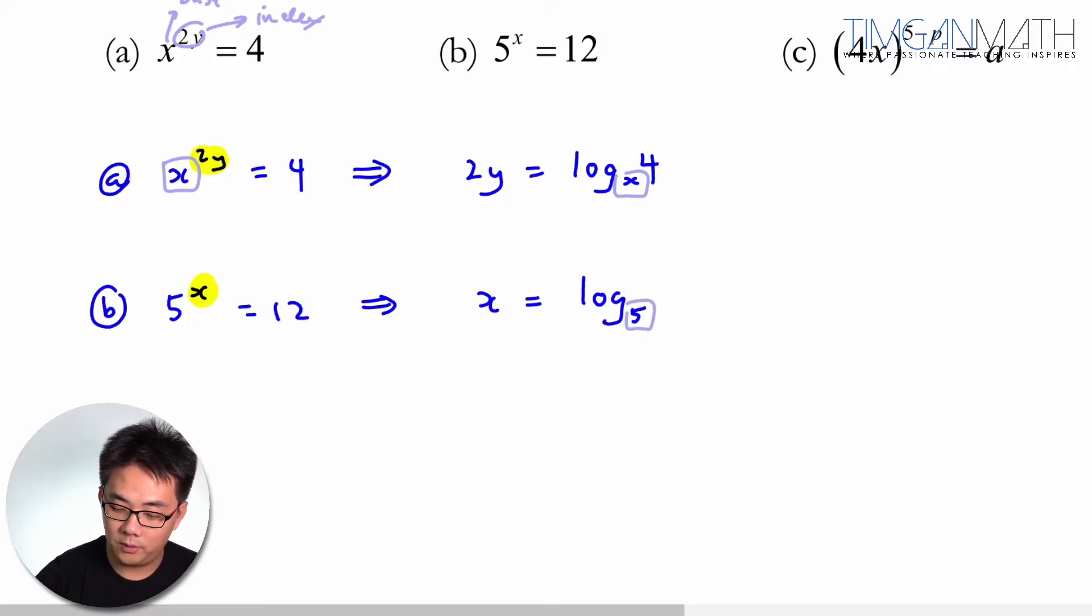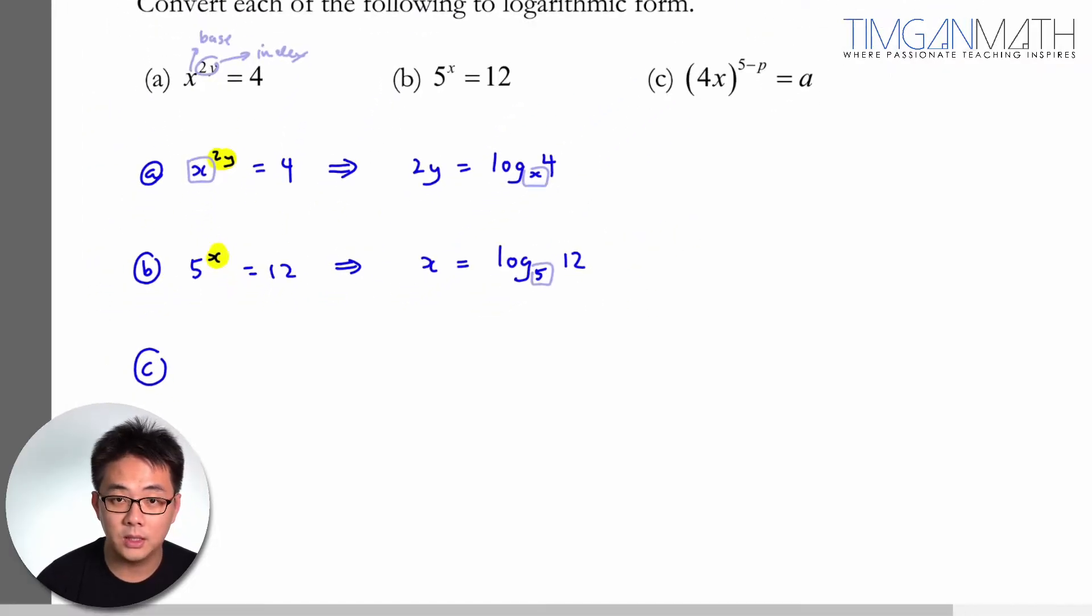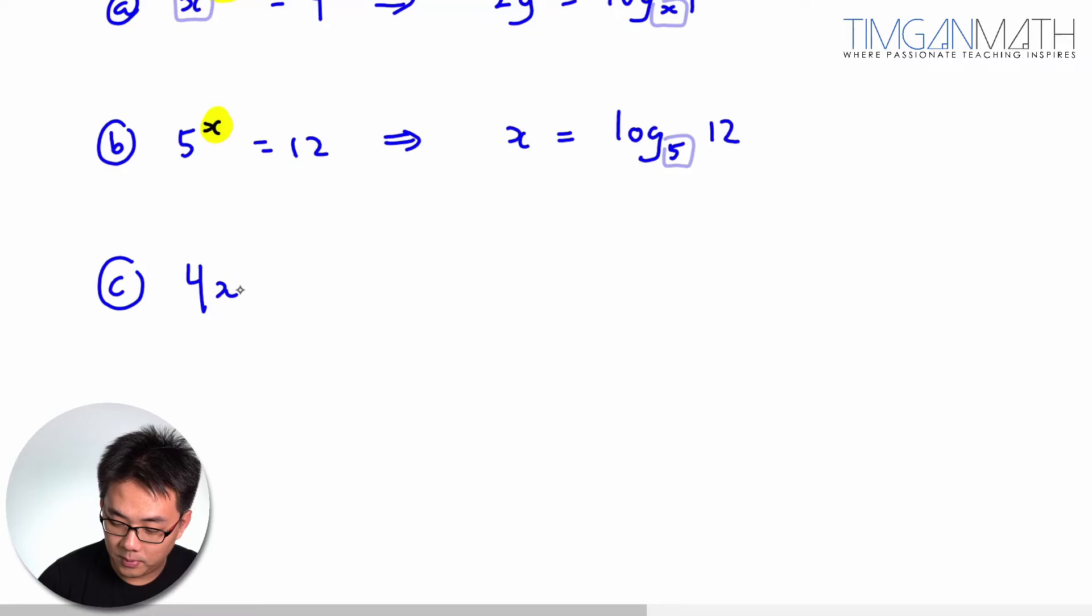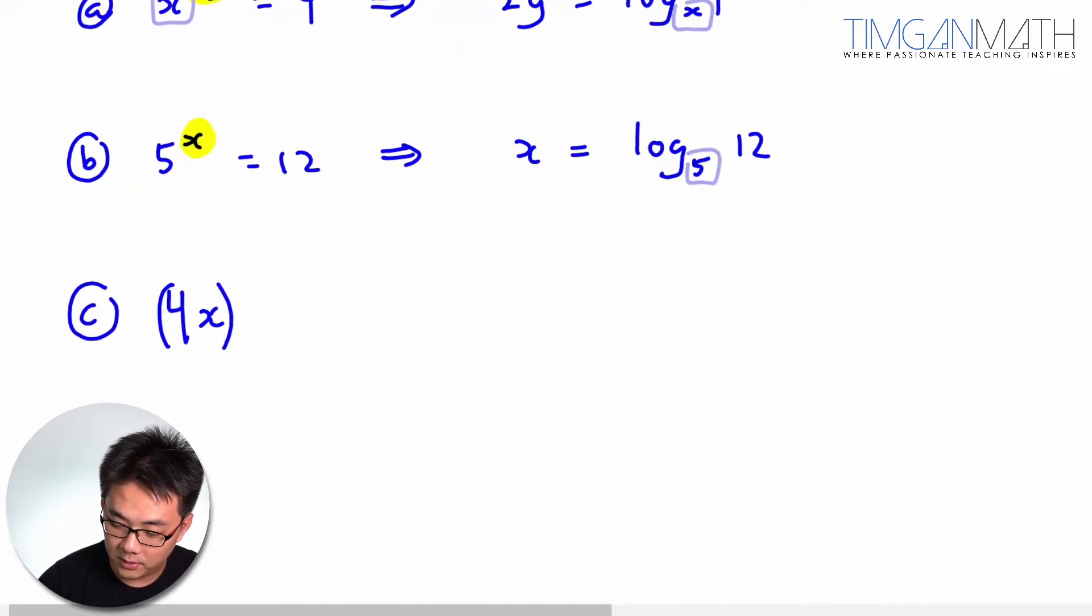And if you look at c, which is (4x) to the power of 5 minus p equals to a.